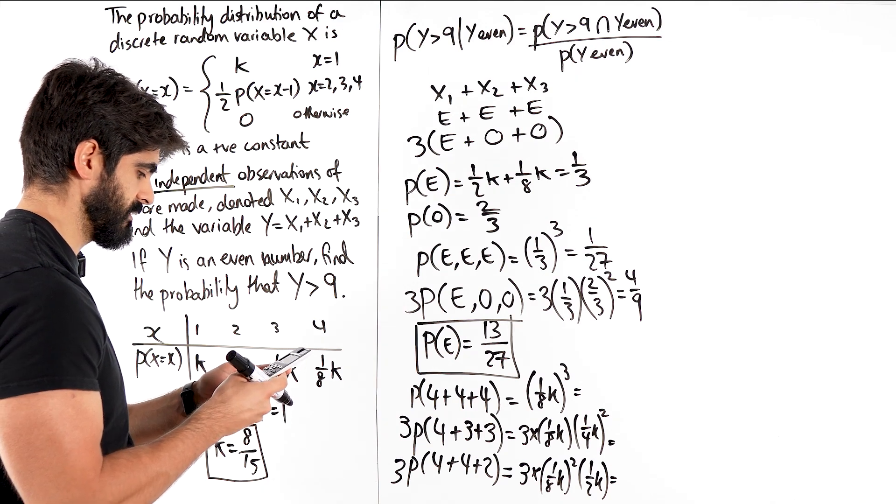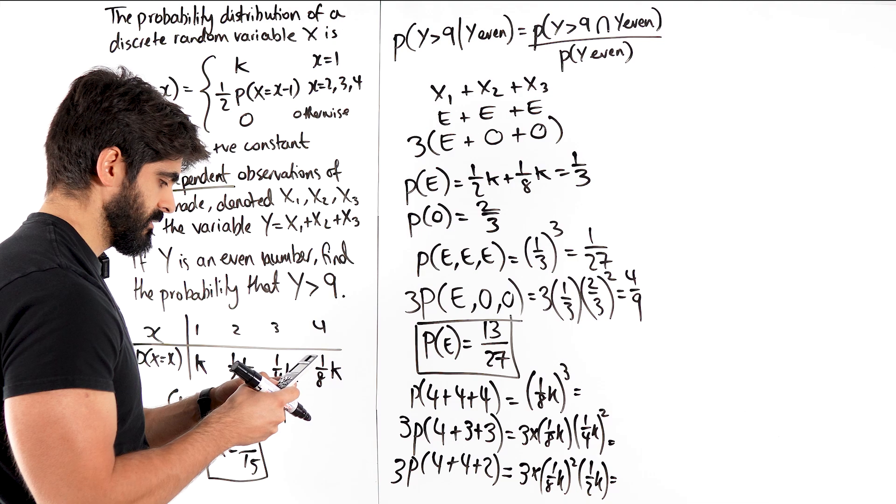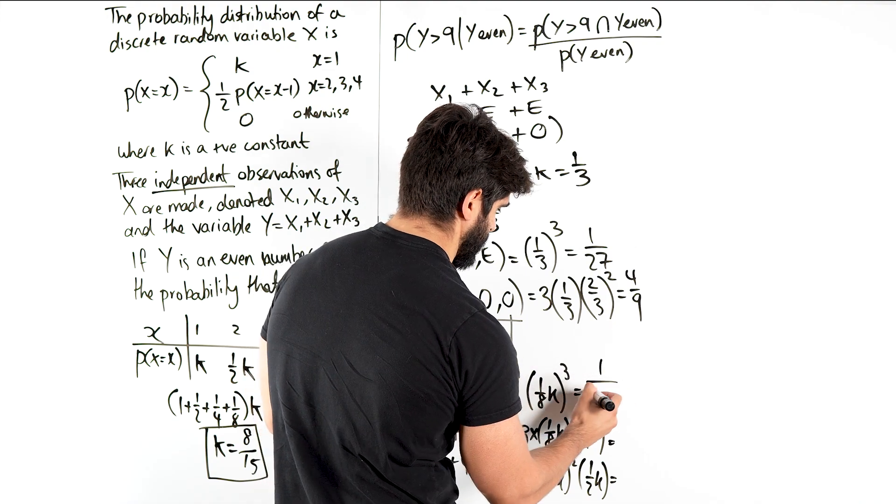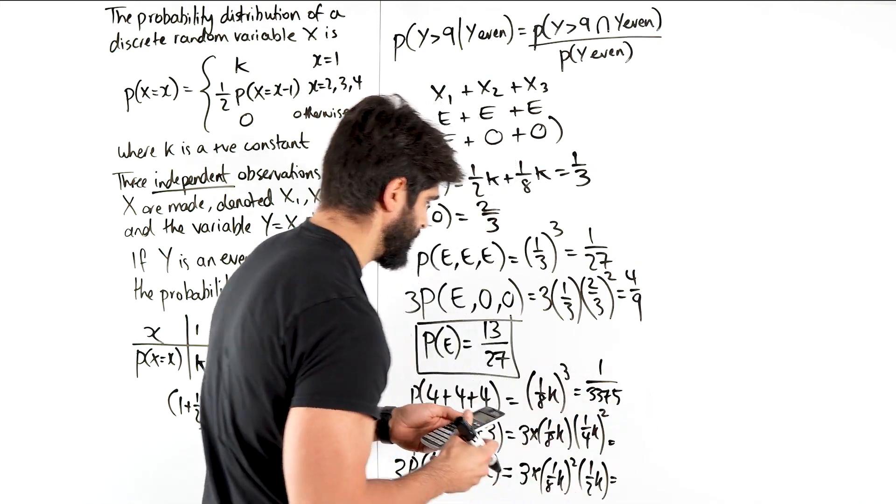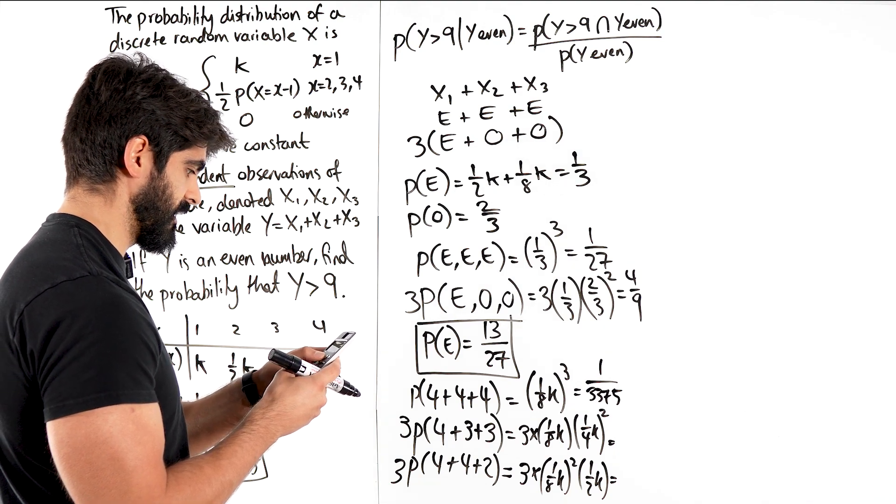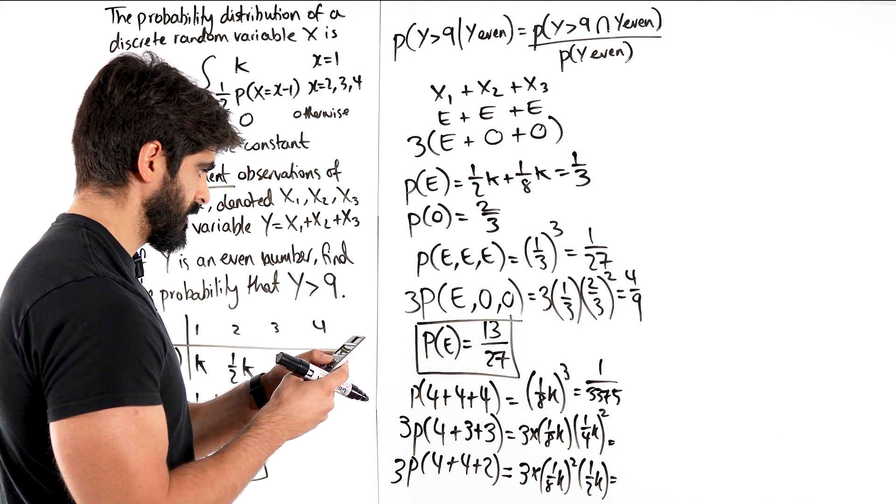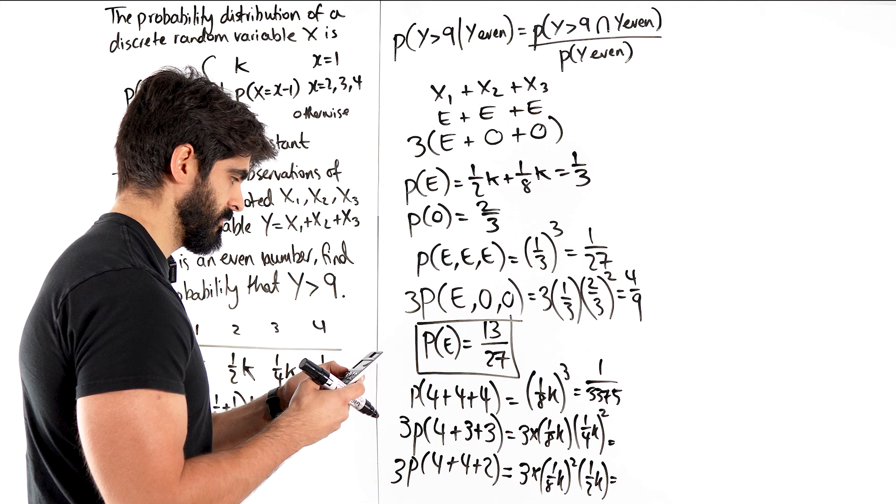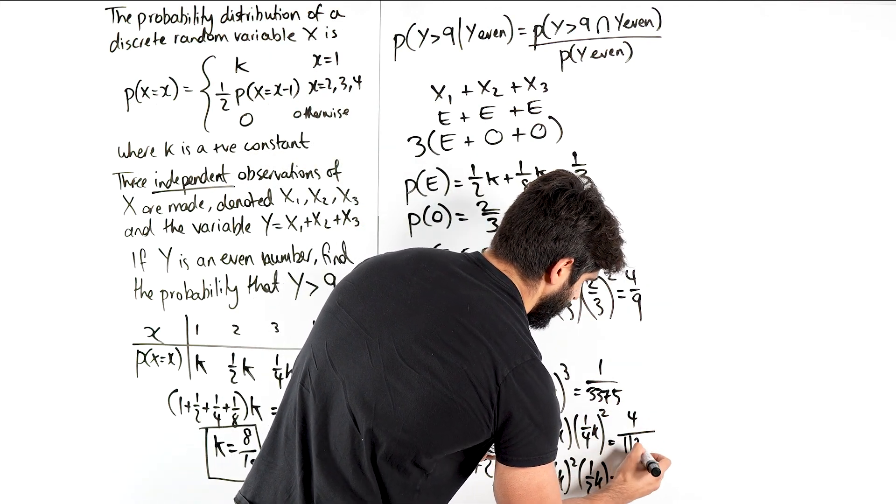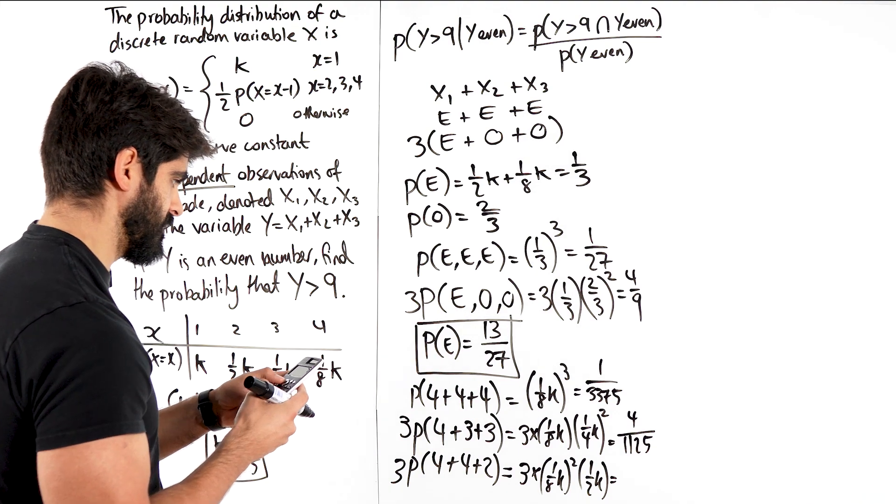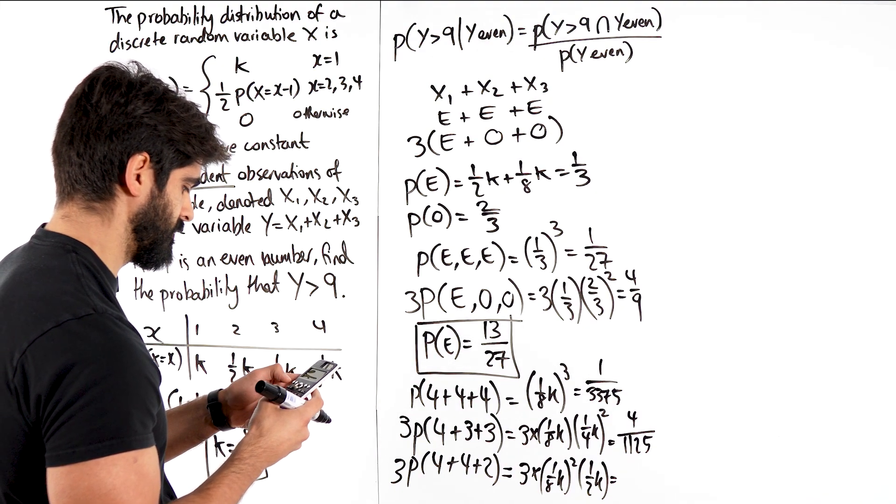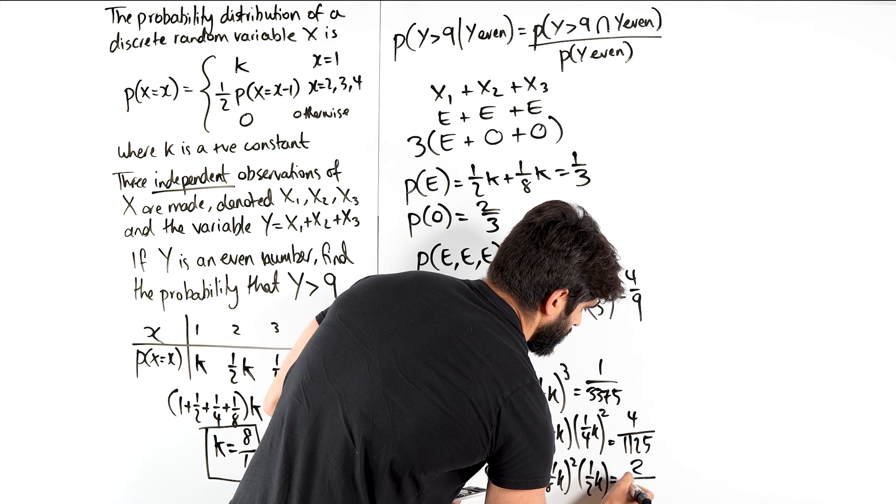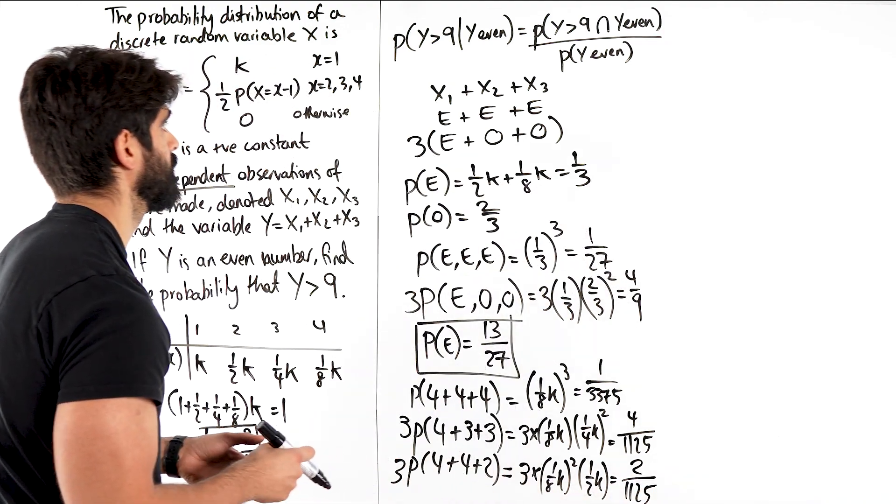So, k is 8 over 15. So, I have 1 eighth a cubed. That's a horrible number. I hope this is right. 1 over 3375. Then I have three lots of 1 over 8 k times 1 quarter a squared. 4 over 1125. And finally, this one gives me 2 over 1125. So, that means that my numerator is that sum, so I'm adding that all up. So it becomes 1 over 3375 plus 4 over 1125 plus 2 over 1125 all over the probability of even.